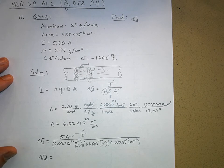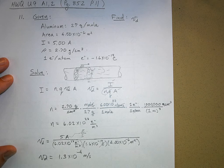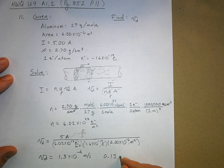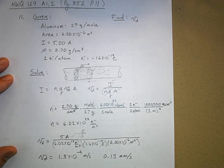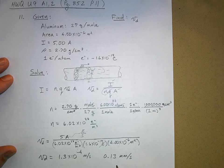You plug that into your calculator and you will get 1.3 times 10 to the negative 4 meters per second, which can also be expressed as 0.13 millimeters per second. A tenth of a millimeter per second. That's really slow.